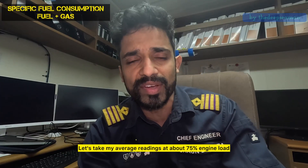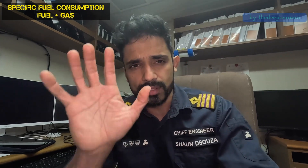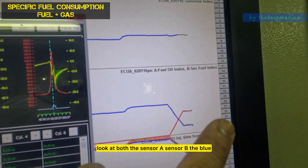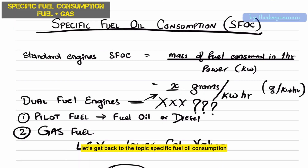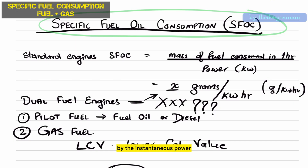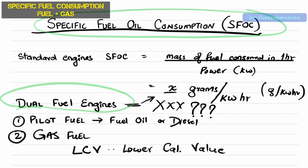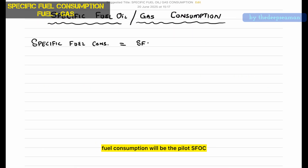Let's take average readings at about 75% engine load and calculate specific fuel consumption — that's the fuel oil for the pilot and the fuel oil for the gas. For a quick reference, let's look at both sensor A and sensor B: the blue is the fuel oil, the red is the gas, and that's the split index on the MOPA. Specific fuel oil consumption is simply the mass of fuel consumed per unit of power — you divide the mass flow rate by the instantaneous power. These are dual fuel engines, so we have two kinds of fuel: the pilot fuel, which is fuel oil or diesel oil, and the gas fuel — ethane in this case. So the specific fuel consumption will be the pilot SFOC and the specific gas consumption, SGC.